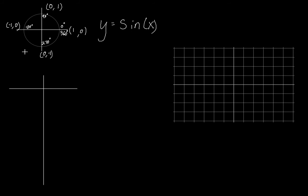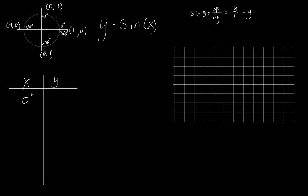The most basic way to graph something is the plug and chug method — you pick an x value, plug in and find the y value. So let's figure out: when x is zero degrees, what is y? Sine of any angle equals opposite over hypotenuse. On the unit circle, opposite equals the y value and the hypotenuse is one. So we're really just looking at the y coordinate of each point on the unit circle. At zero degrees the y coordinate is zero.